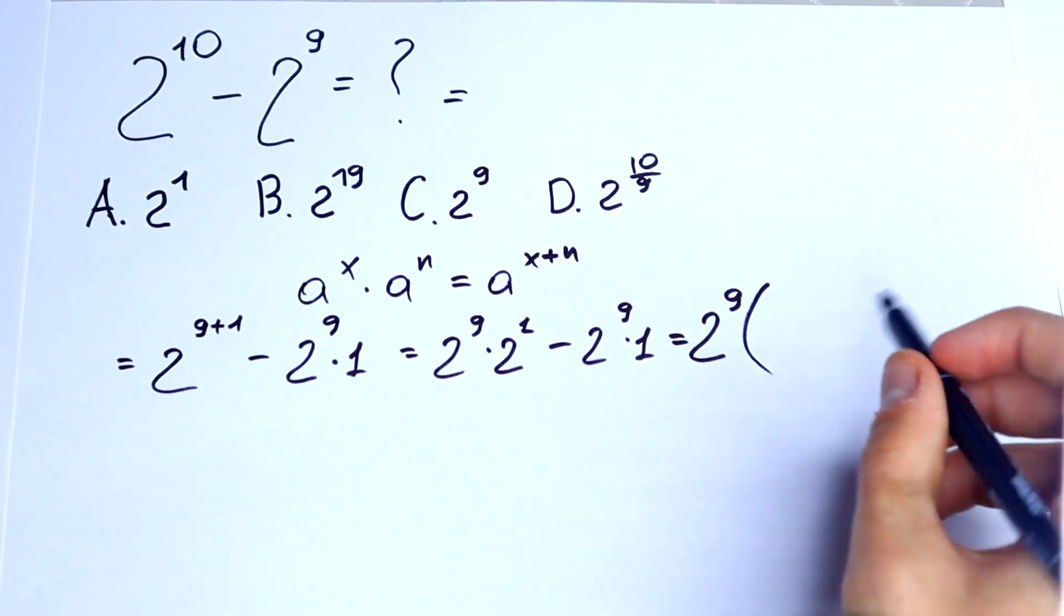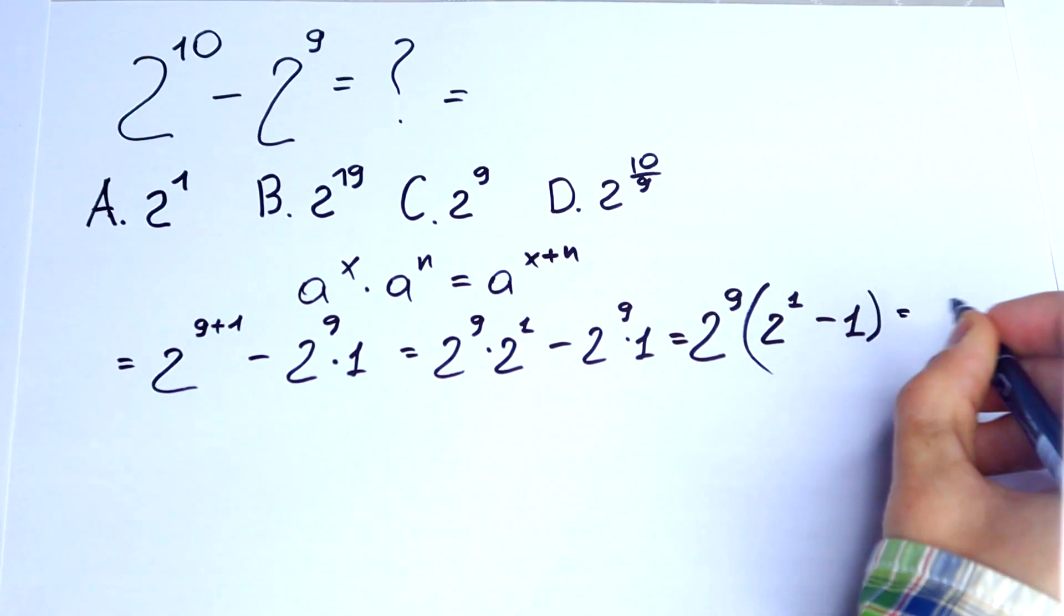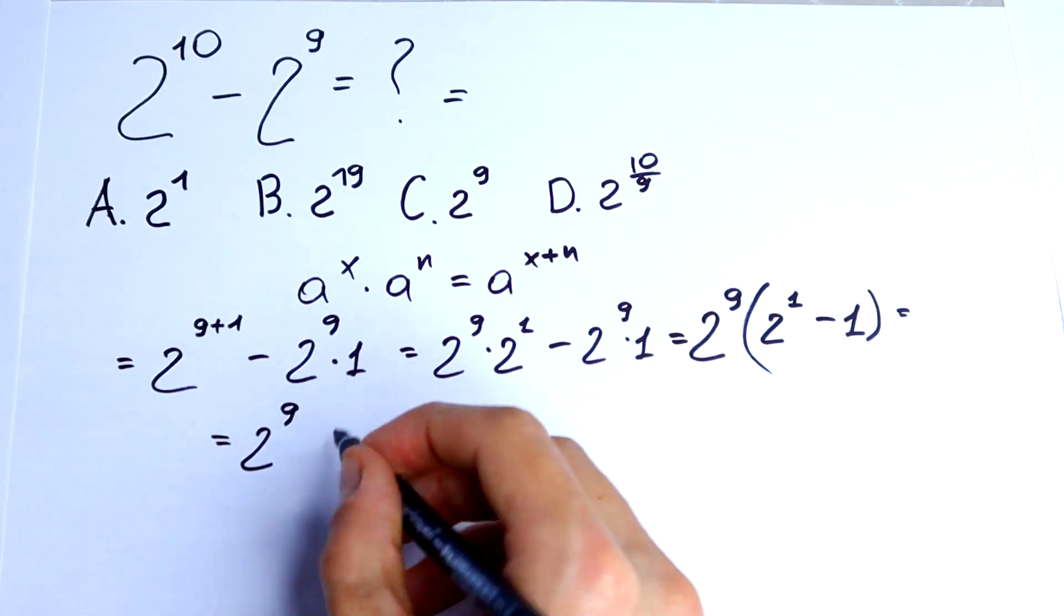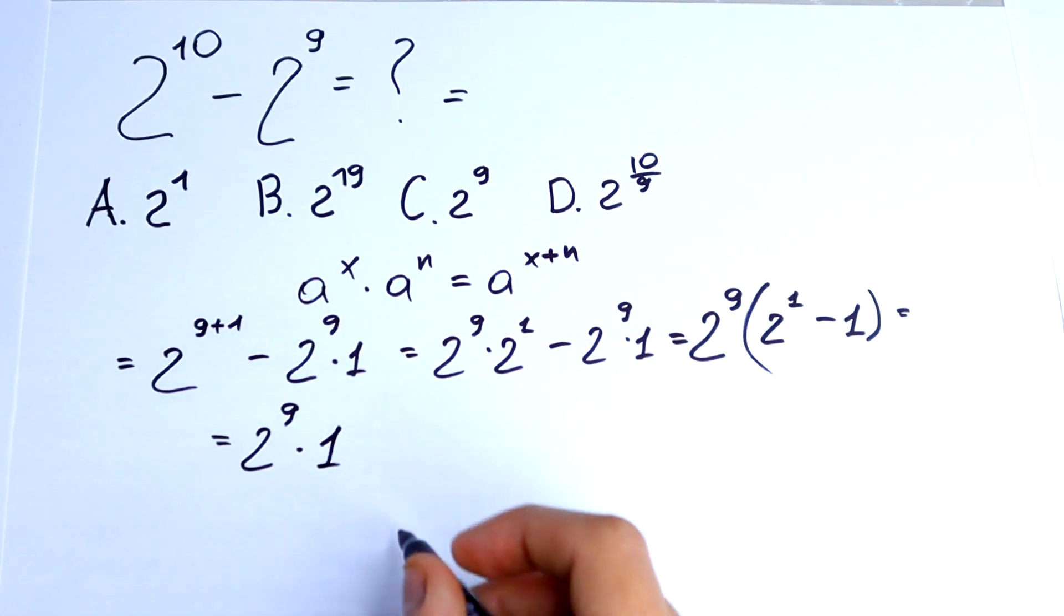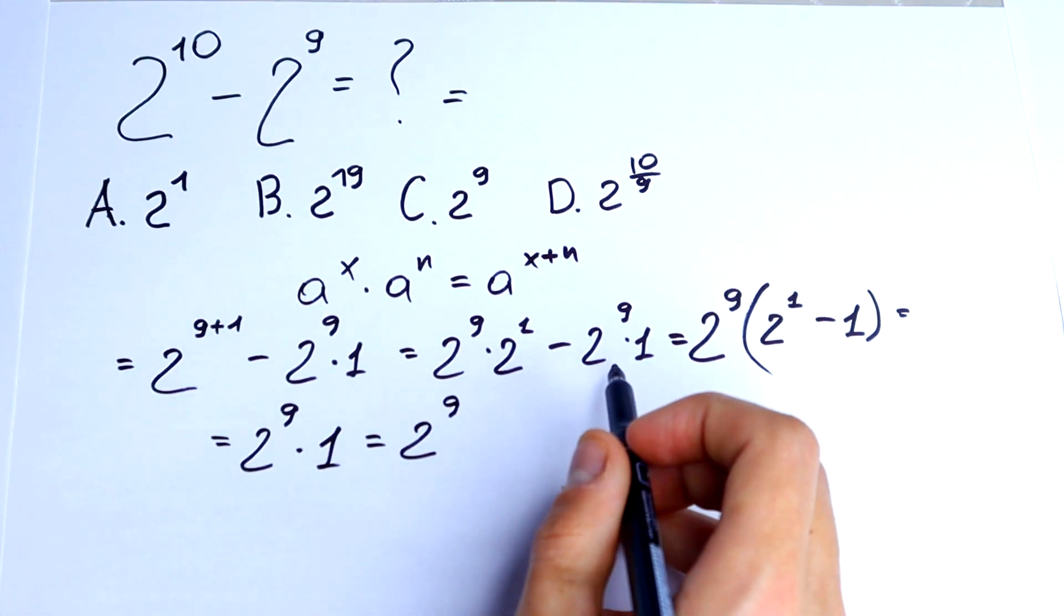And in parentheses we would have 2 to the first power minus 1. It would be equal to 2 to the 9th power times 1, which equals 2 to the 9th power.